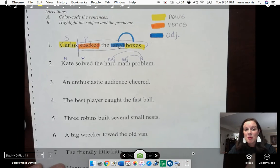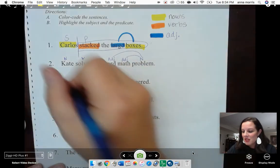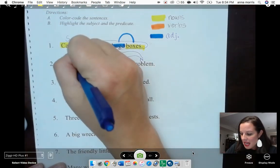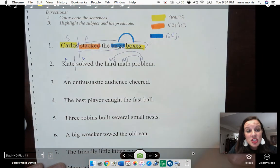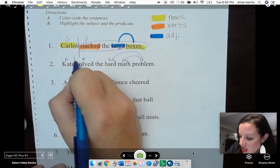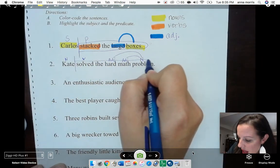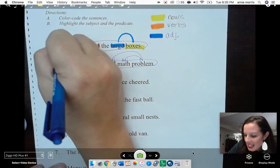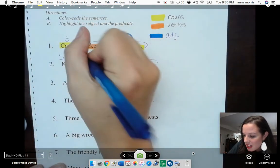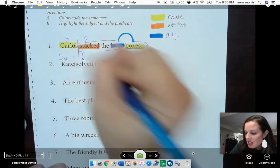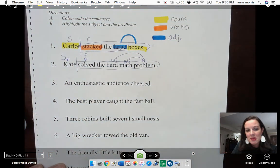I can also label my subject and predicate. Who solved the hard math problem? That's right. It was Kate. And what did she do? She solved the hard math problem. Kate is my subject and solved the hard math problem becomes my predicate.